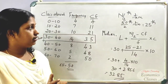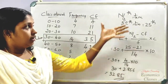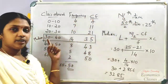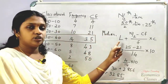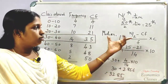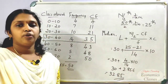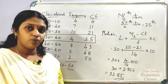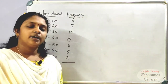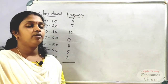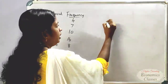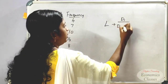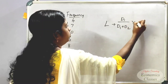Now we can calculate the mode. In the continuous series, the mode equation is: Mode = L + D1 / (D1 + D2) × C.